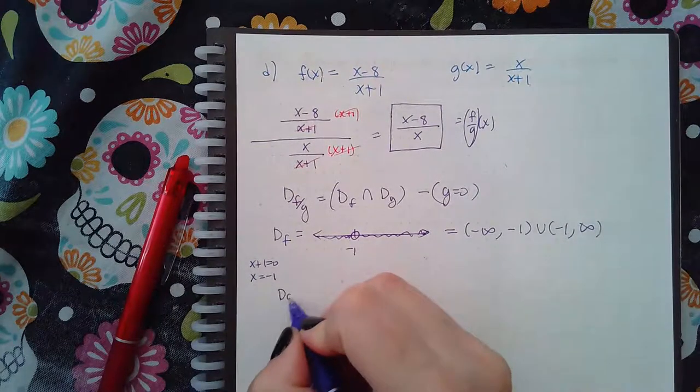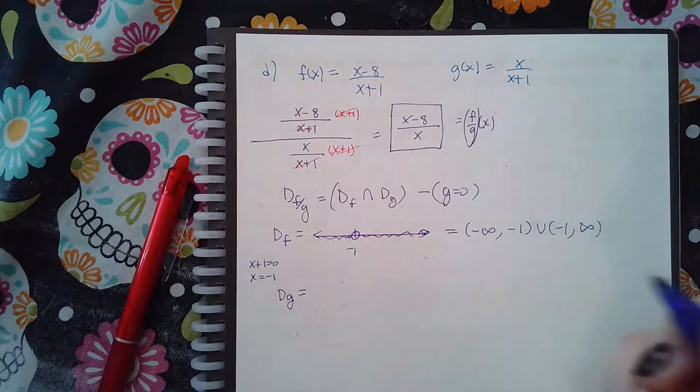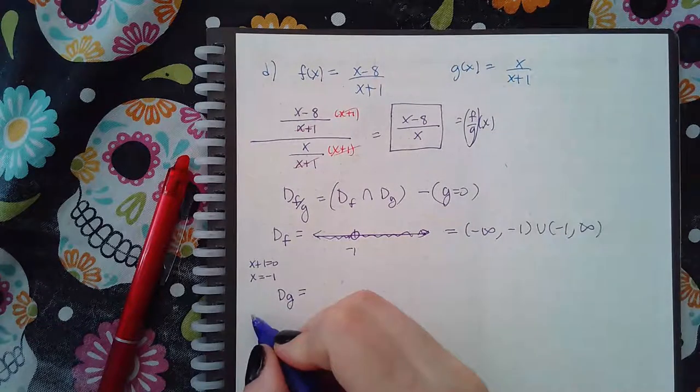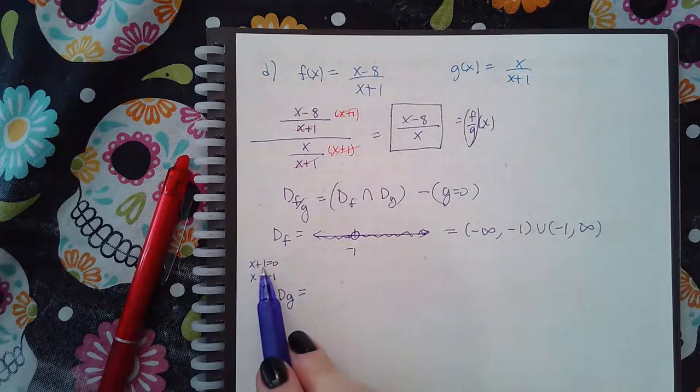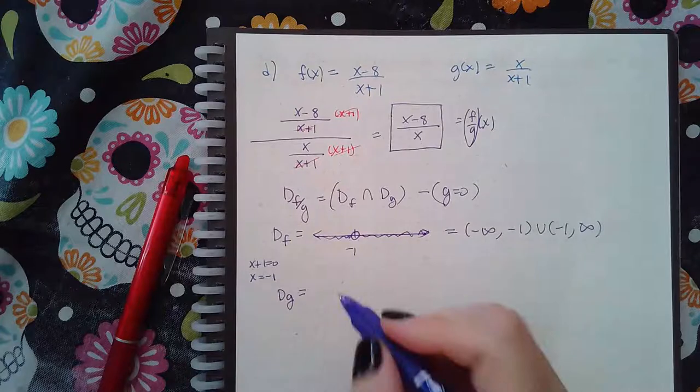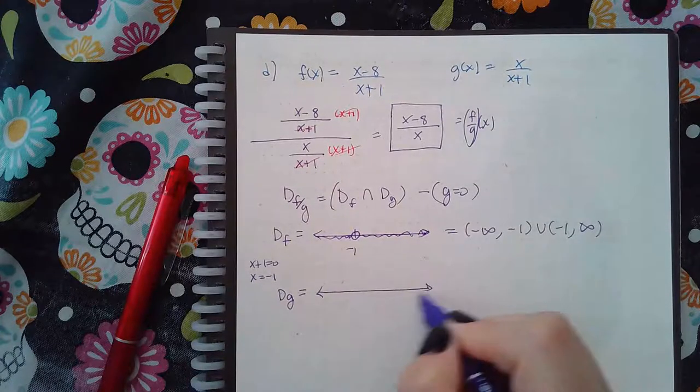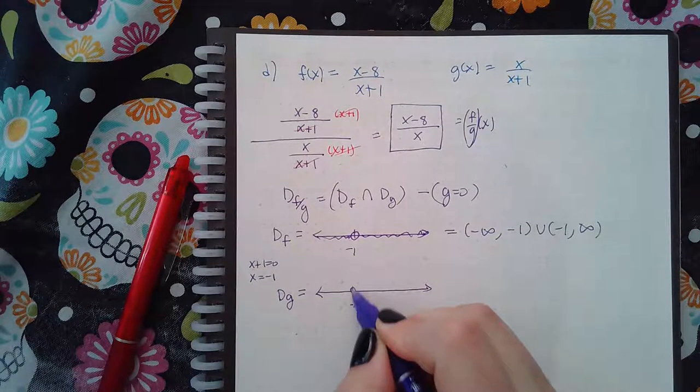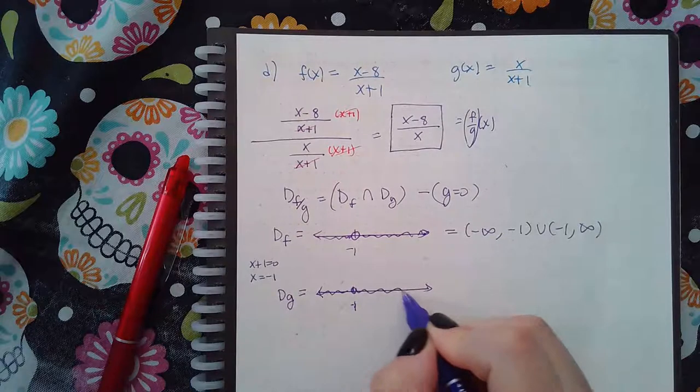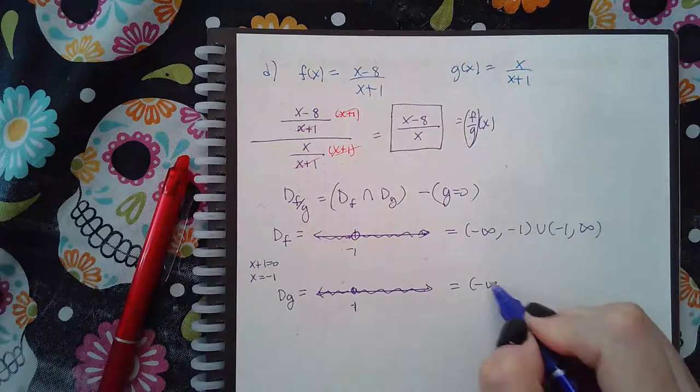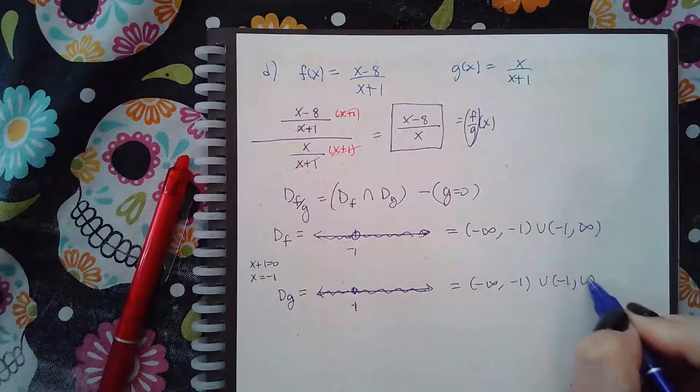The domain of g is all numbers except where this denominator equals 0. And it's the same denominator, so I have the same value to exclude. So it's the same negative infinity to negative 1 and negative 1 to infinity.